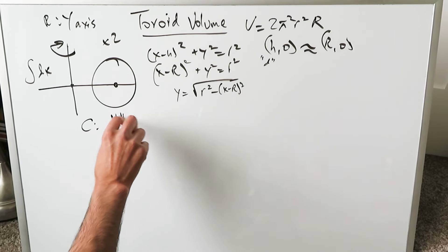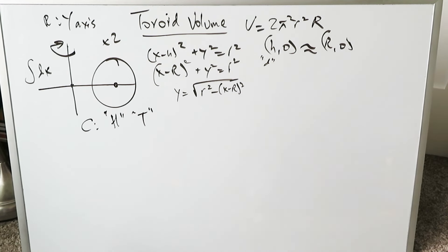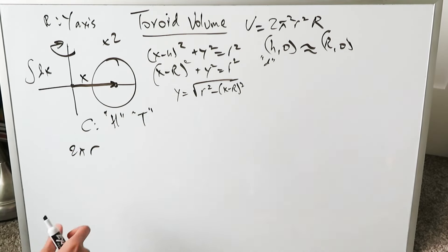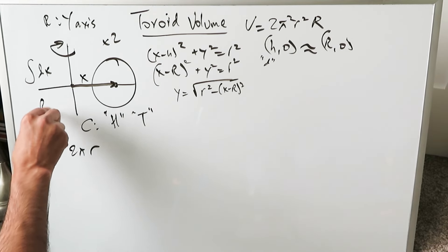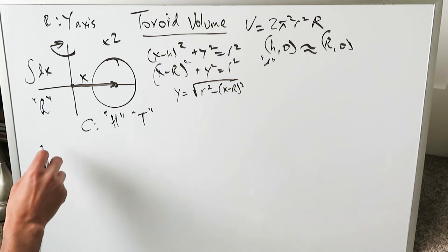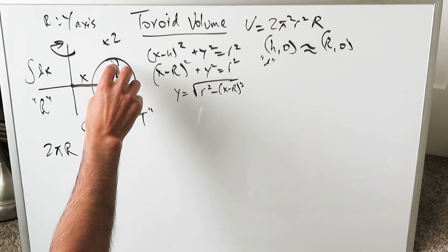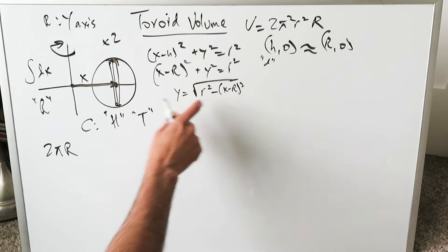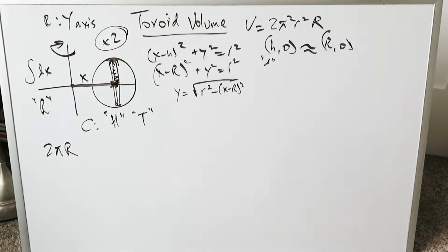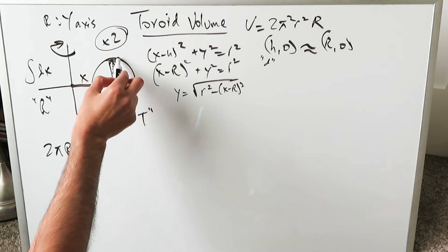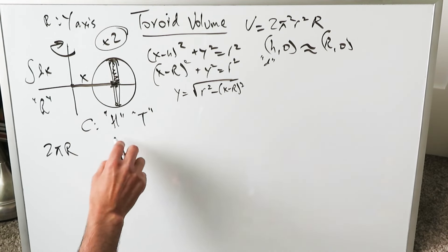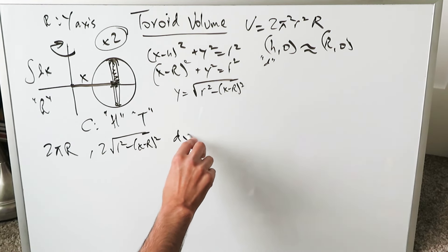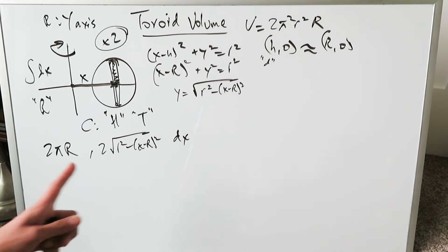The cylindrical shell components are: circumference, height of a Riemann rectangle, and thickness. The circumference is 2πx, but since x here corresponds to the major radius R, the circumference becomes 2πR. The height technically spans the full Riemann rectangle, but the square root only gives us the upper half — hence the factor of two makes sense. The full height is 2√(r² − (x − R)²), and the thickness is dx.